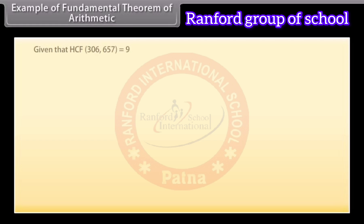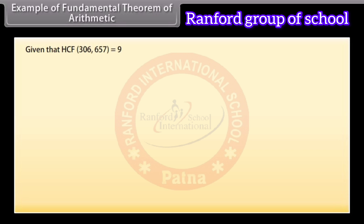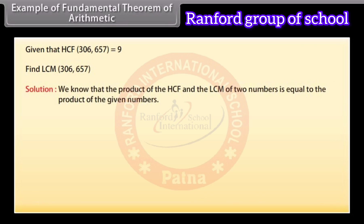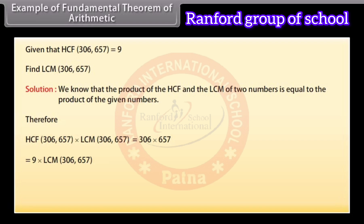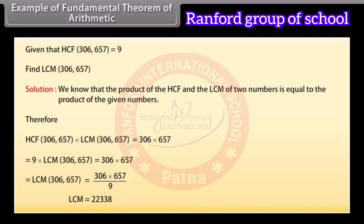Given that HCF(306, 657) equals 9, find LCM(306, 657). We know that the product of HCF and LCM of two numbers equals the product of the given numbers. Therefore, 9 into LCM(306, 657) equals 306 into 657. Solving, LCM equals 22,338.